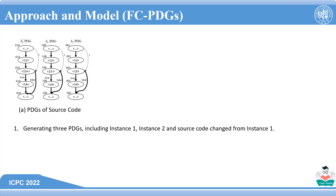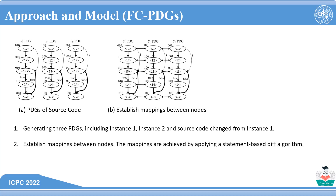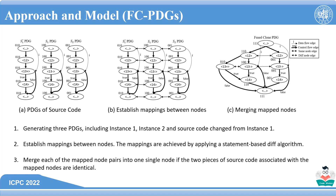As shown in the left-hand subfigure, S1 denotes clone instance 1, S2 denotes instance 2, and S1' denotes the source code after S1 changed. Then, we establish node mappings between these PDGs based on a traditional diff algorithm, thus getting a mapped PDG graph. Finally, we merge the mapped nodes. If the mapped nodes are the same, each node is labeled with an existence vector, indicating whether the node exists in S1, S2, or S1'.